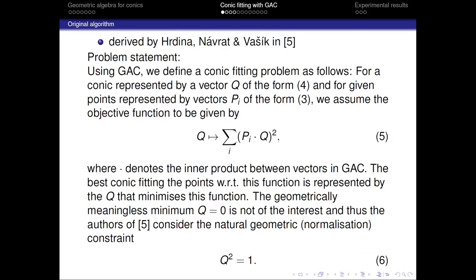For the sake of the further computations, we also denote the first two elements of the conic vector as a vector w and the next four elements as a vector v. As I already mentioned, our article describes four conic-fitting algorithms and the first of them we call the original algorithm.